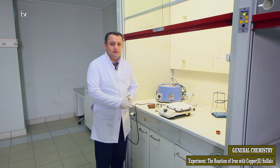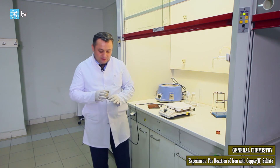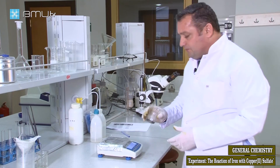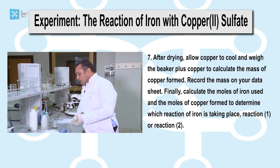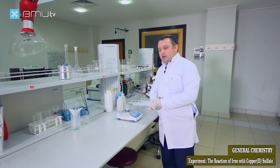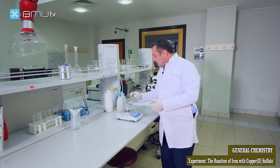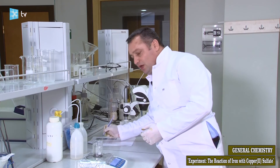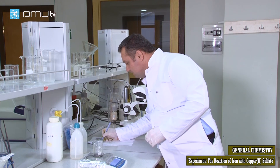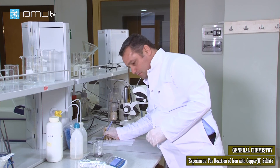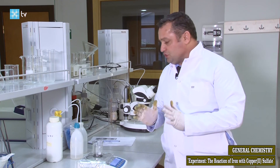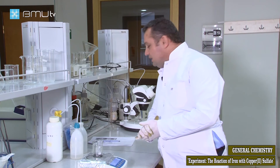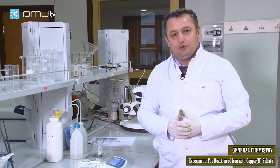After allowing the copper to cool, we weigh the beaker plus the copper again. At the beginning of the experiment we weighed the empty beaker and recorded its mass. Now we record the mass of the beaker plus the copper after cooling. This value is very useful because we need it to calculate the limiting and excess reagents during the chemical reaction.